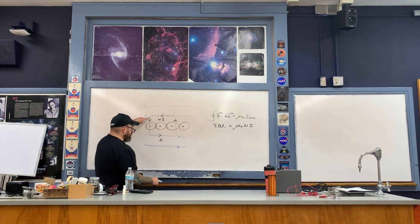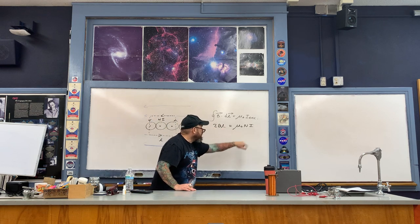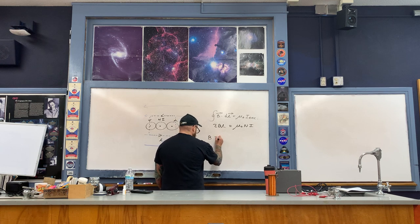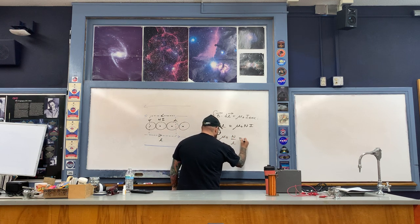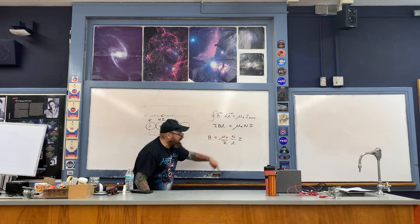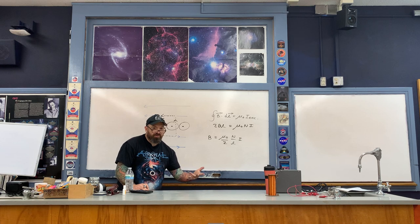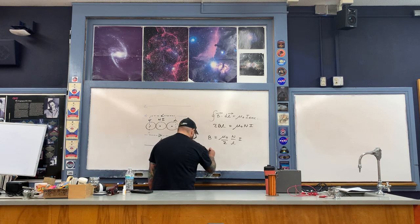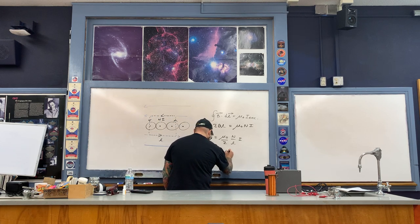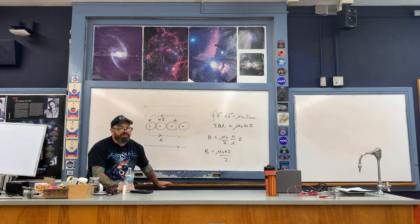Dividing both sides by 2L gives B equals μ₀ N I over 2L. Since N over L equals little n, the number of turns per unit length, we get B equals μ₀ n I over 2. This is a constant magnetic field dependent on the number of turns per unit length.